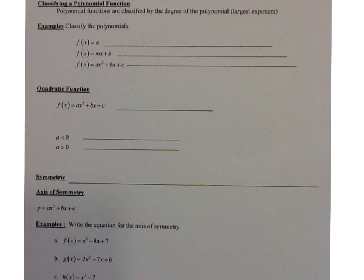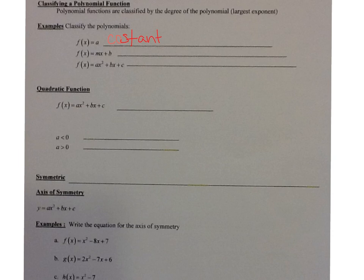When you classify a polynomial function, they are classified by the degree of the polynomial. The degree of the polynomial is its largest exponent. So take a look at the examples — classify the polynomials. We have f(x) = a. This is a constant function because there is no x in the polynomial, so this is a degree of zero.